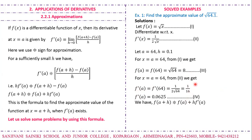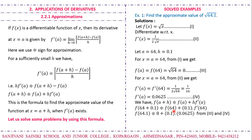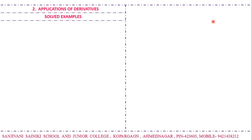Using the approximation formula f(a+h) ≈ f(a) + h·f'(a), we put in the values and simplify. We get f(64.1) = √64.1 ≈ 8.00625. So this is the approximate value of √64.1.